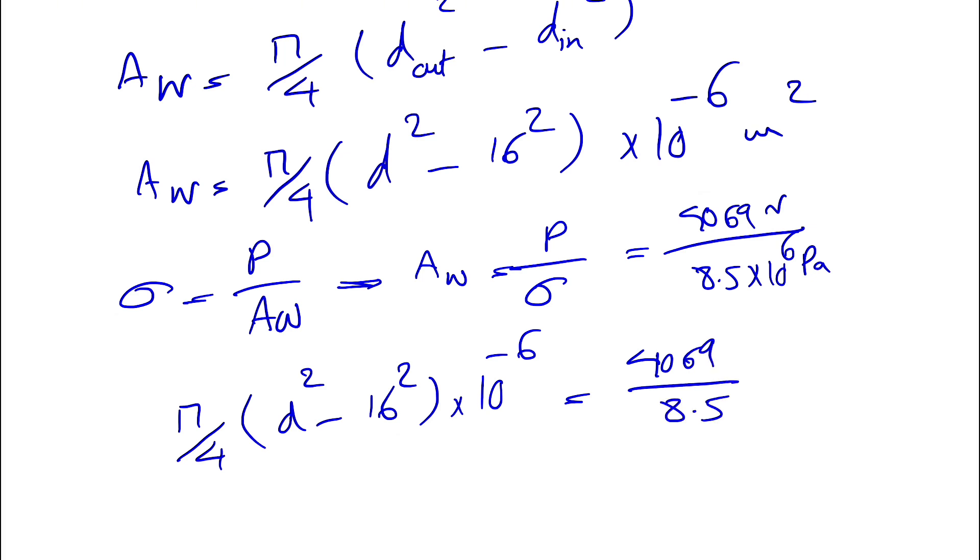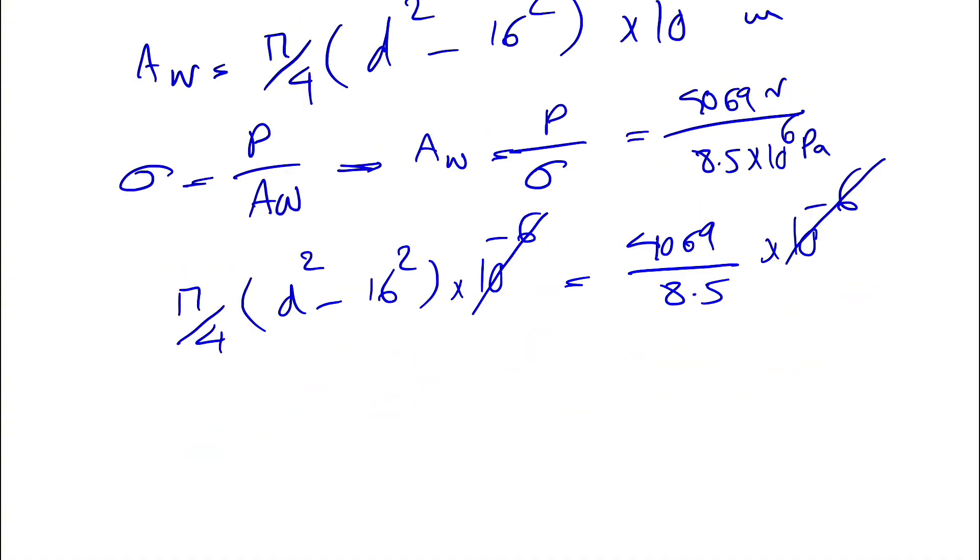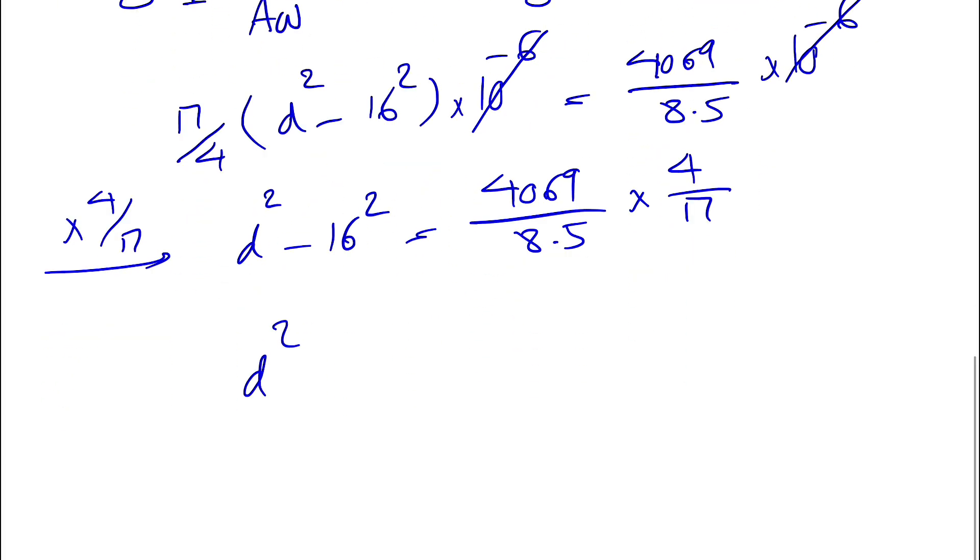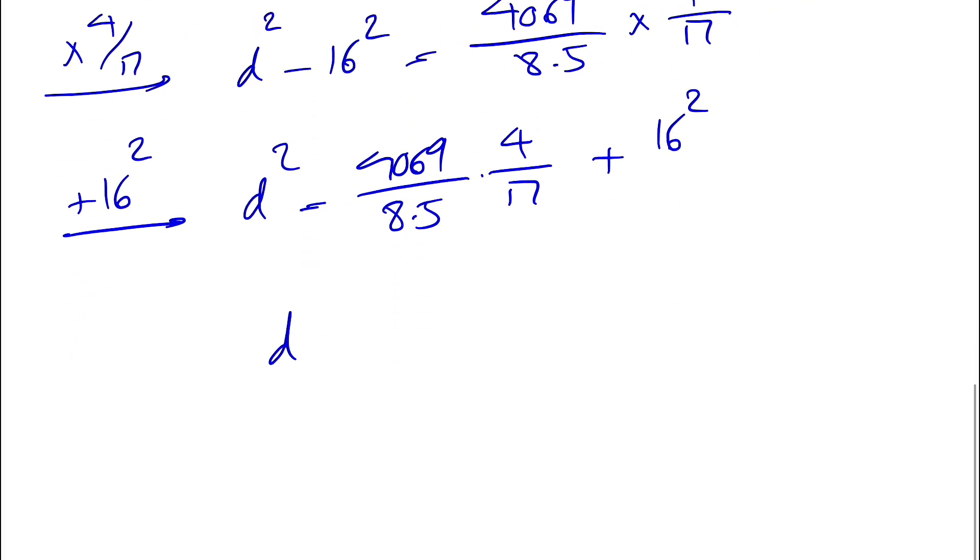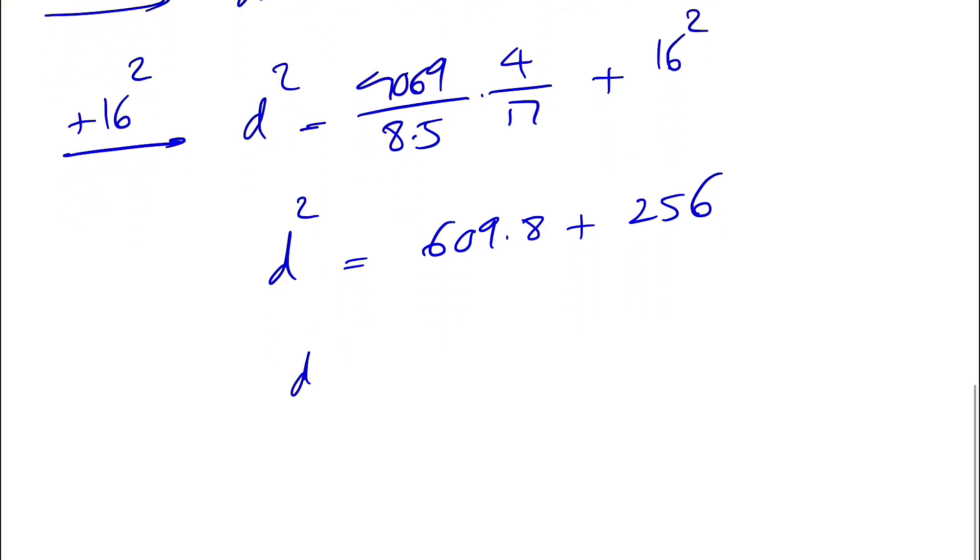This will be equal to 4069 divided by 8.5 times 10 to the 6. We can cancel out the 10 to the minus 6 from each side. If we find d squared, we can multiply this by 4 divided by pi. So d squared minus 16 squared will be 4069 divided by 8.5 times 4 over pi. Our d squared will be 4069 divided by 8.5 times 4 over pi plus 16 squared, which equals 609.8 plus 256.